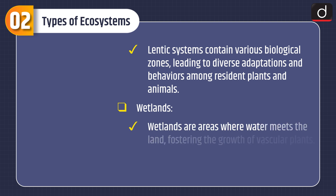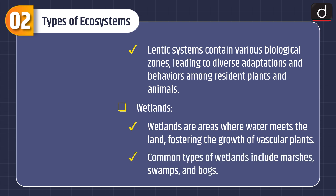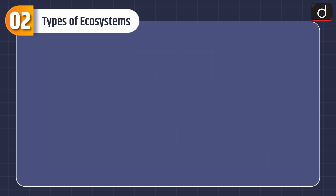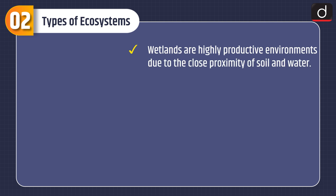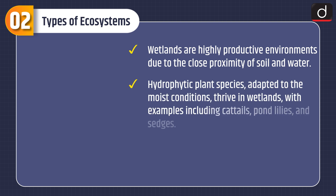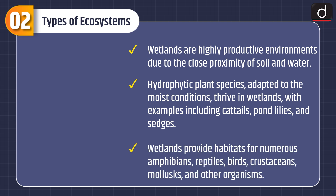Wetlands are areas where water meets the land, fostering the growth of vascular plants. Common types of wetlands include marshes, swamps and bogs. Wetlands are highly productive environments due to the close proximity of soil and water. Hydrophytic plant species adapted to moist conditions thrive in wetlands, with examples including cattails, pond lilies and sedges. Wetlands provide habitats for numerous amphibians, reptiles, birds, crustaceans, mollusks and other organisms.